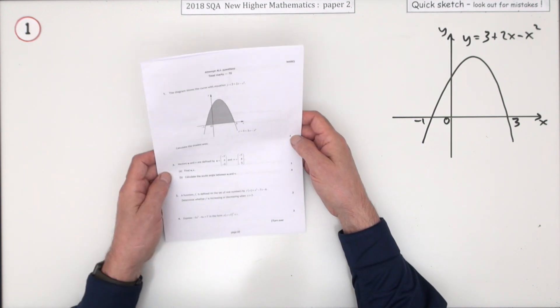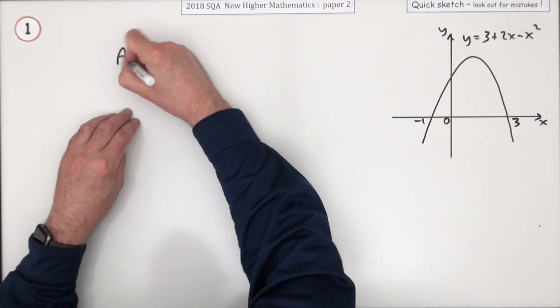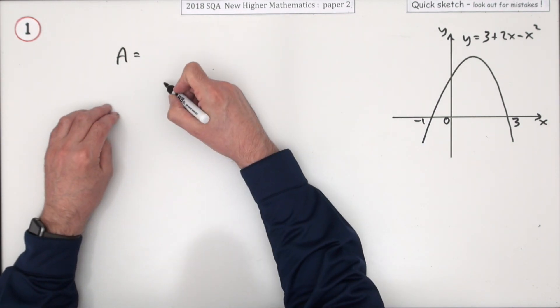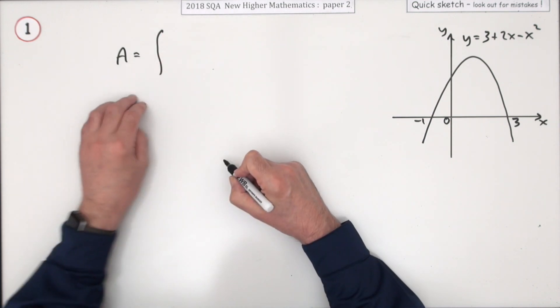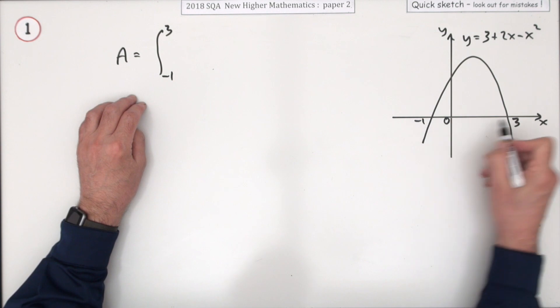Just the four marks there but it is quite straightforward. The first mark would be for stating how you're going to work out the area, which is the integral. So put in the limits, the integral from negative one to three.